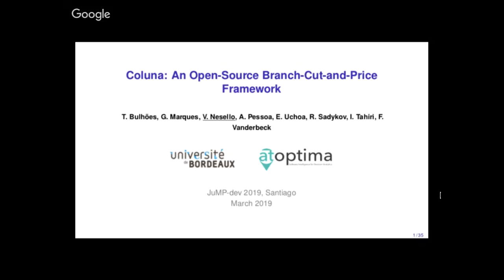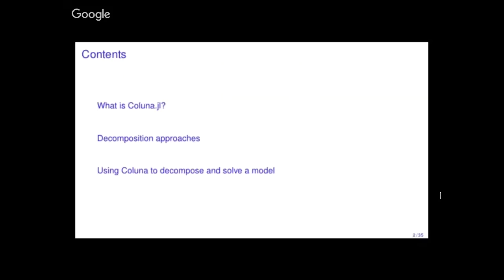I'll introduce to you Coluna, which is an open-source branch-cut-and-price framework. In my talk, first I will briefly tell what Coluna.jl is, then, since it's used to solve decomposition — decomposed problems — I'll tell a bit about the decomposition approaches, and then how to use Coluna to decompose and solve your model.